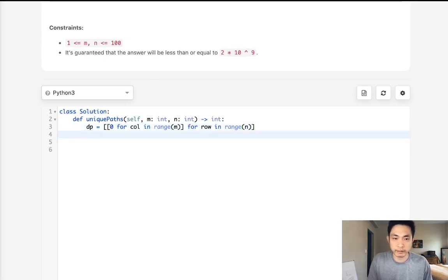Now we want to fill out the first row. So for I in range of the number of columns—that's M—we'll say DP of the first row, and for every single column, or I, make that equal to one.